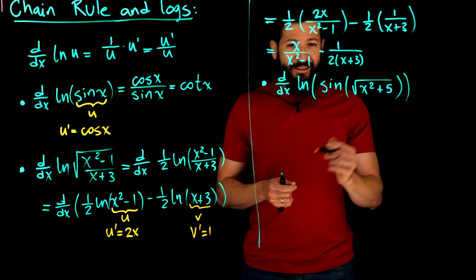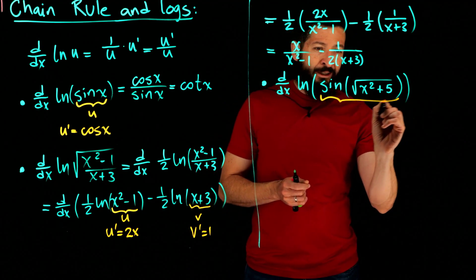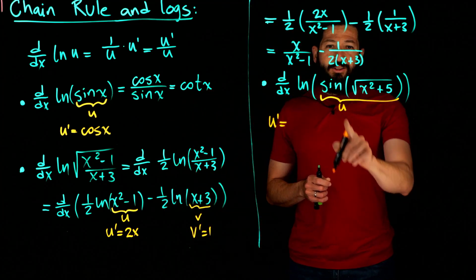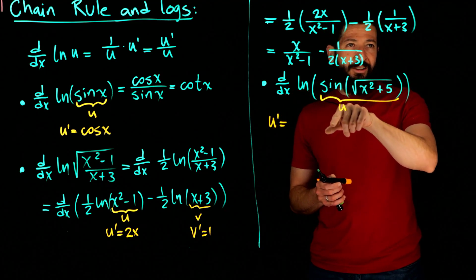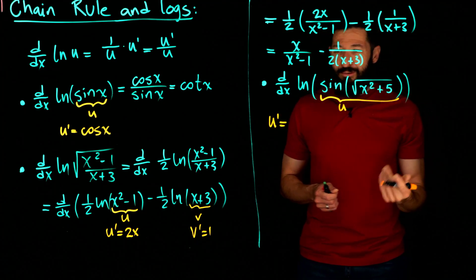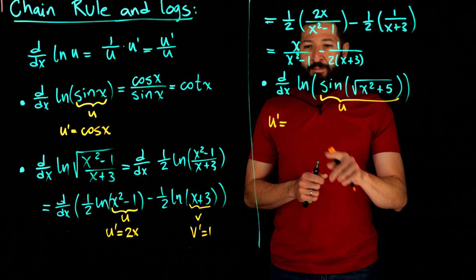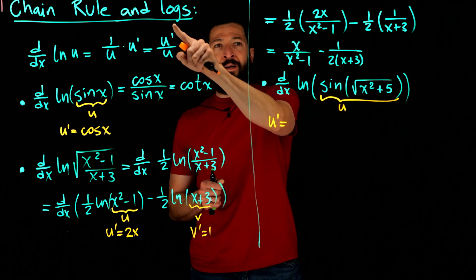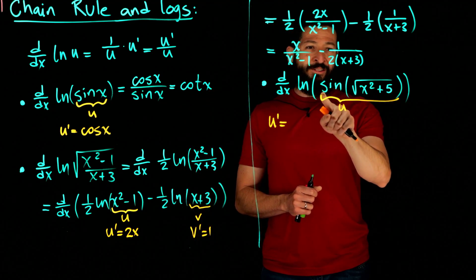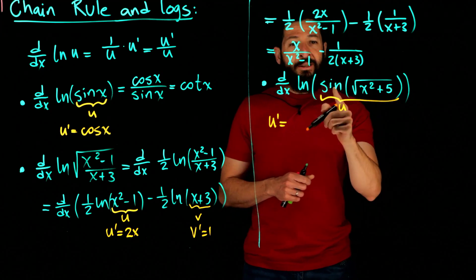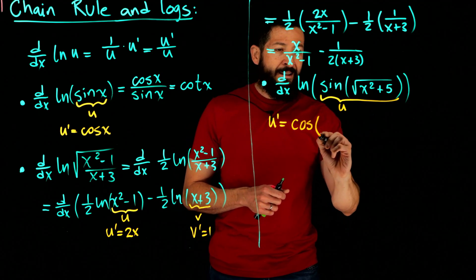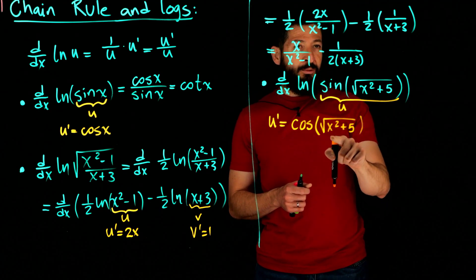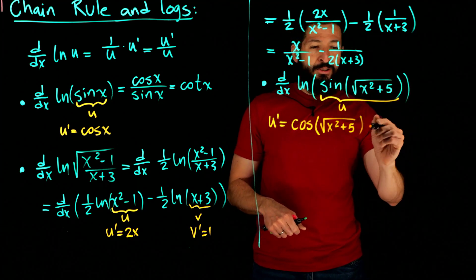I'll grab u to be sine of the square root of x squared plus 5, and compute u prime separately. I concern myself with the very outermost function first. Since I want to write the derivative as u prime over u, I address the logarithm layer first. Then for u prime, the outermost function is sine, so I write cosine and copy the inside. By the chain rule, I then pay the tax which is the derivative of the inside.